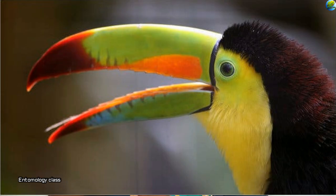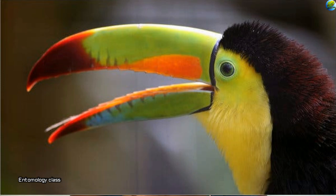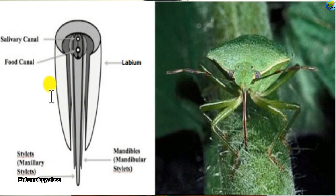The labium is turned into a beak, like a bird's beak. Just like that, the bug turns its mouthpart into a beak. The labium forms the beak and inside it the stylets are fixed — the stylets made from the mandibles and maxillae are turned into needle-like structures kept protected inside the labium.